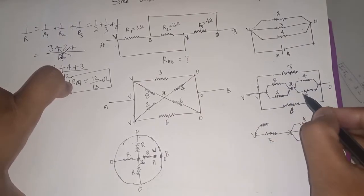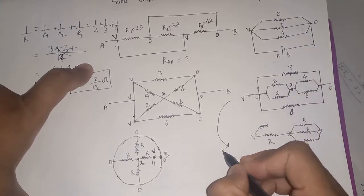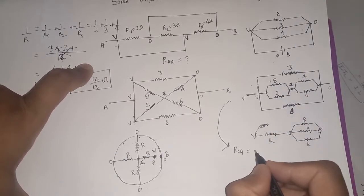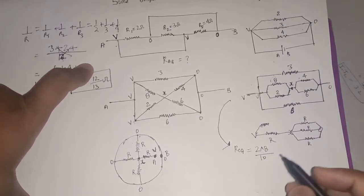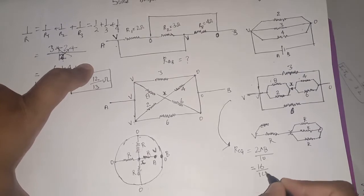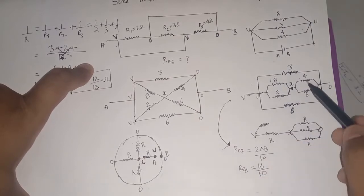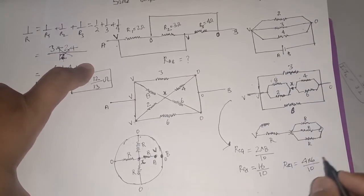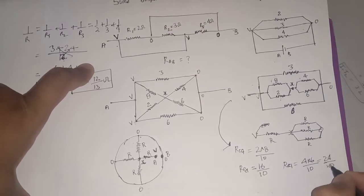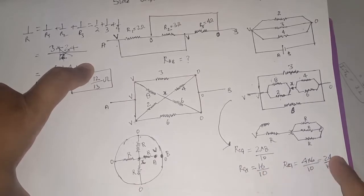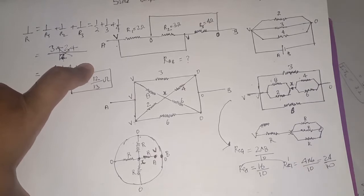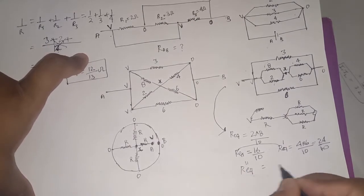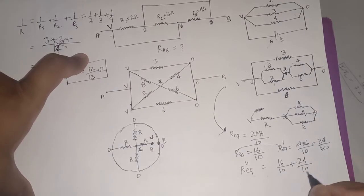For the second question — 8 and 2 in parallel, and 4 and 6 in parallel. R equivalent of 8 and 2: 2 into 8 divided by 2 plus 8, that is 16 by 10. R equivalent of 4 and 6: 4 into 6 divided by 4 plus 6, that is 24 by 10. Now these two — 16 by 10 and 24 by 10 — are in series, so R equivalent is 16 by 10 plus 24 by 10.